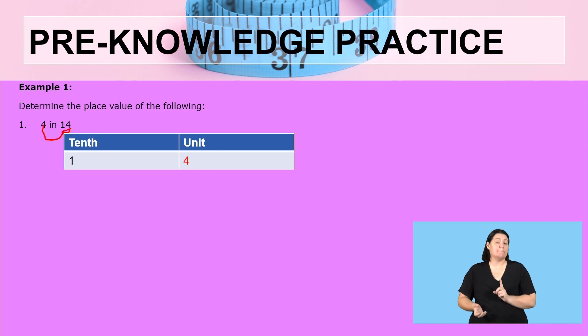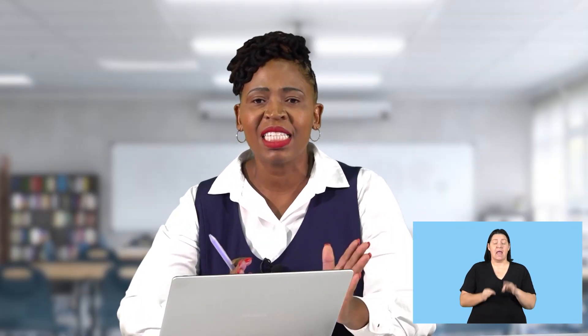Because the question was to determine 4 in the number 14, therefore we say 4 is a unit. So our answer will be a unit. This is possible if you write the digits and determine the place values of all digits in your number.